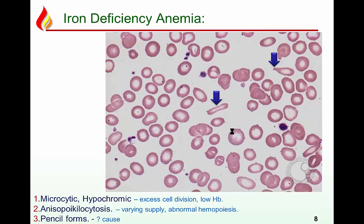In the blood film, most RBCs will be small compared to the lymphocyte. The central pallor is more than one-third the diameter — abnormally increased. Most cells are microcytic hypochromic with pencil cells and anisopoikilocytosis.